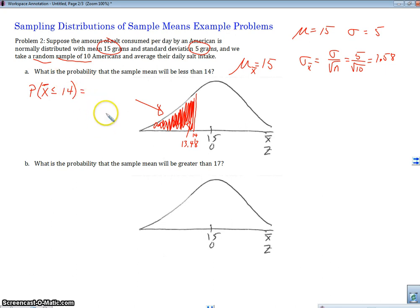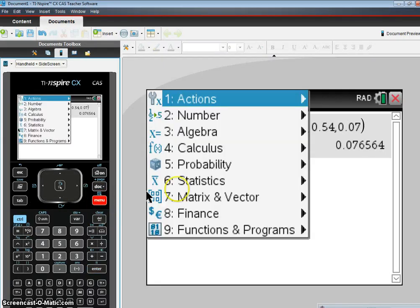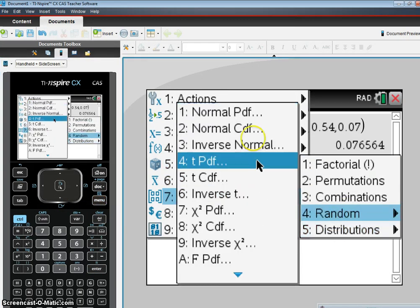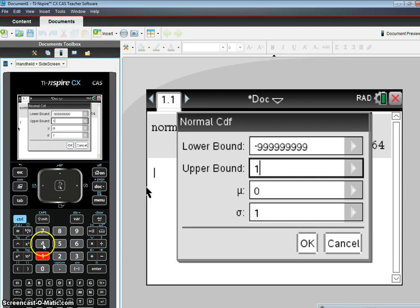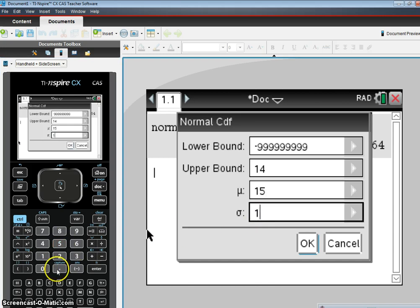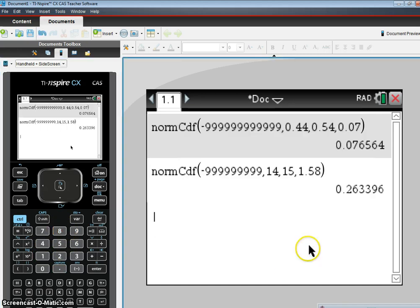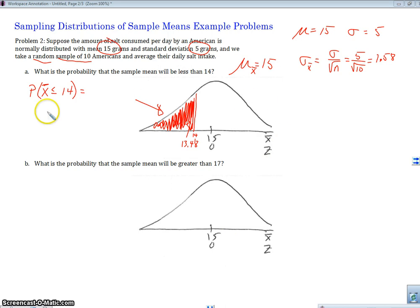So the way we do that is we use normal CDF. So we're going to go to our calculator here. And we're going to do menu, probability, distributions, normal CDF. Our lower bound is negative 99999. Our upper bound in this case was 14. Our μ is 15. And our standard deviation was 1.58. And then we hit enter, and we get 26.34. Alright, so we get an answer here of 26.34. That's it. That's all there is to it.